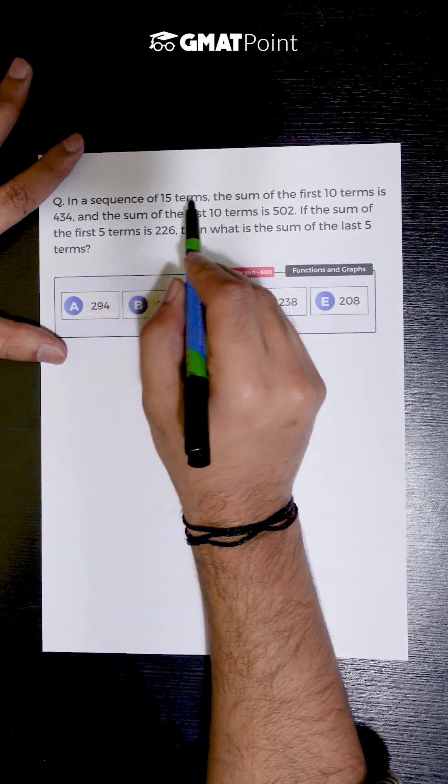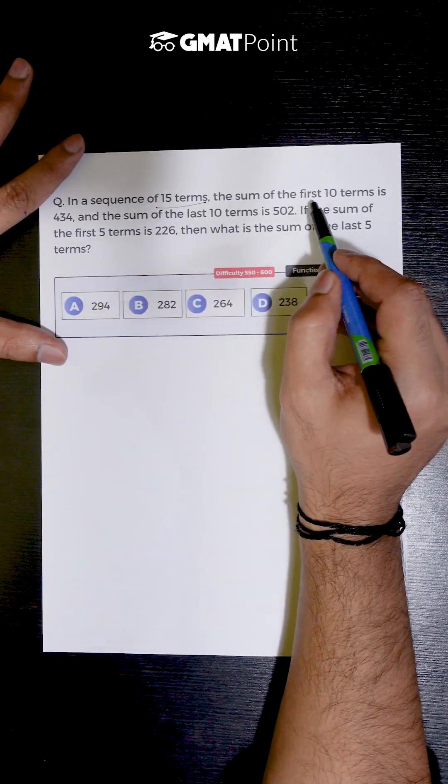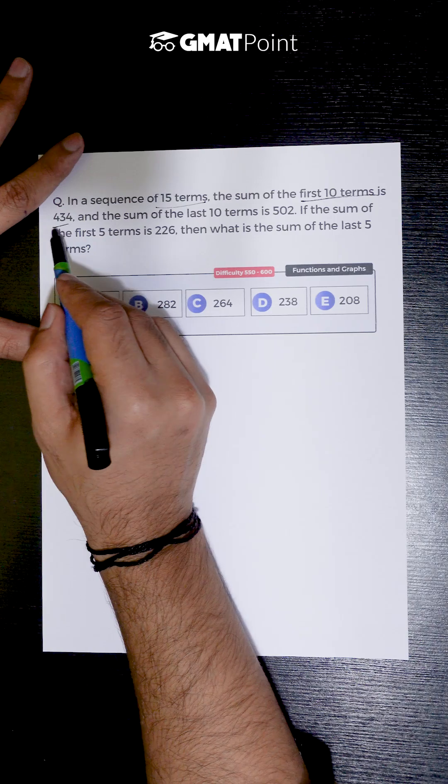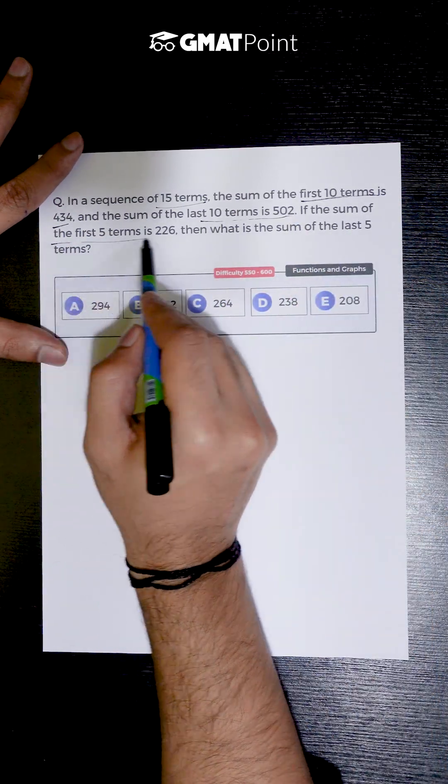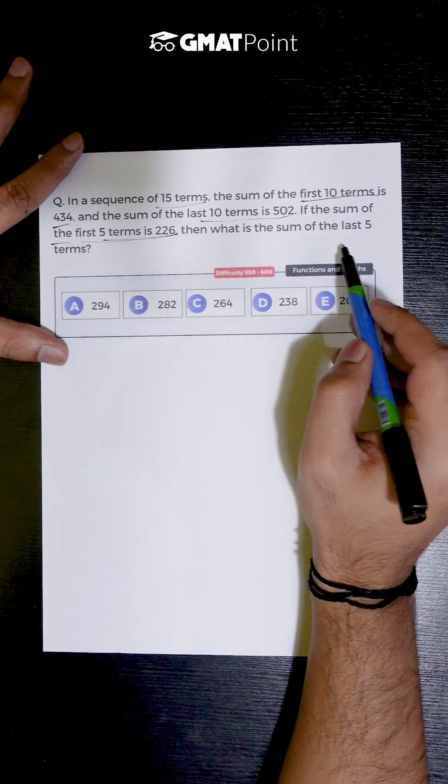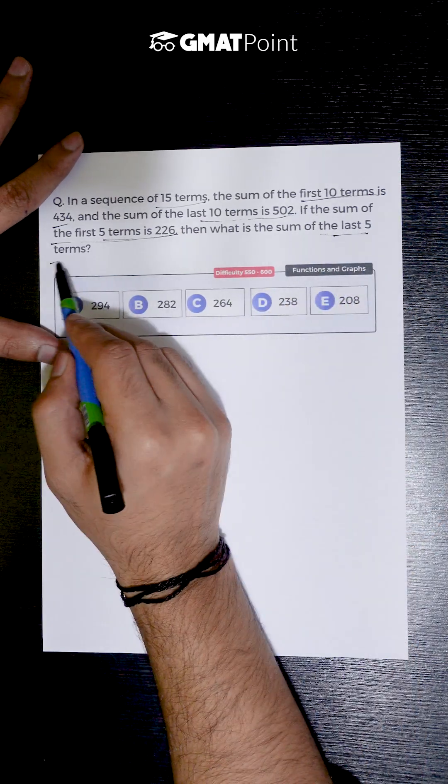Let us take a look at this question. In a sequence of 15 terms, the sum of the first 10 terms is 434 and the sum of the last 10 terms is 502. If the sum of the first 5 terms is 226, then what is the sum of the last 5 terms?